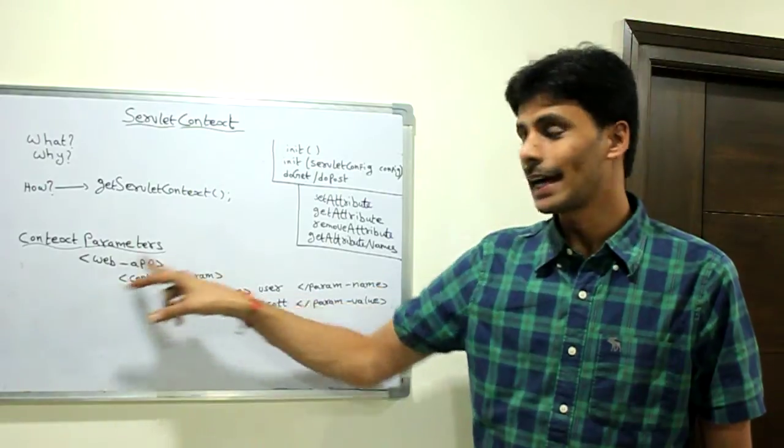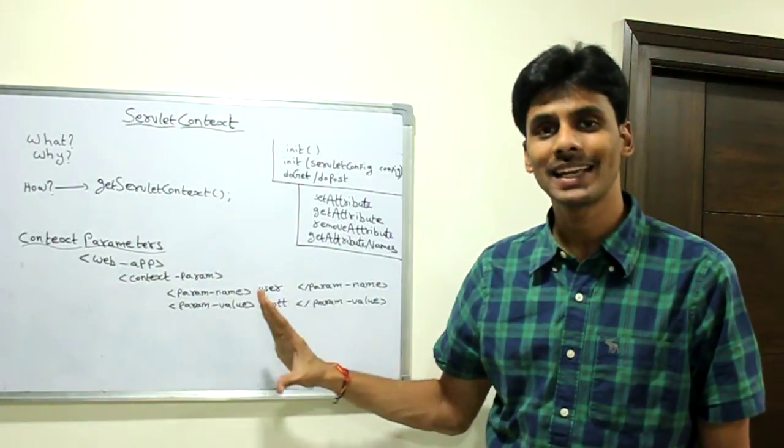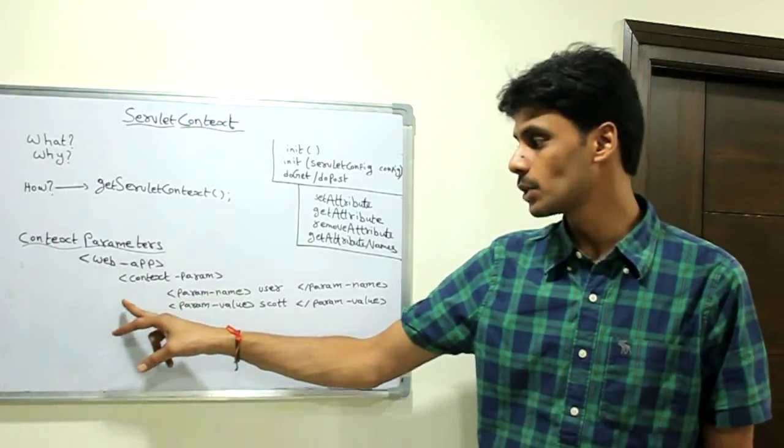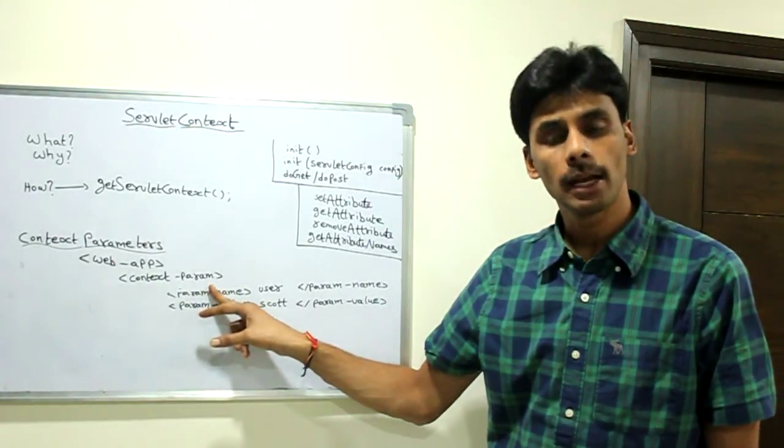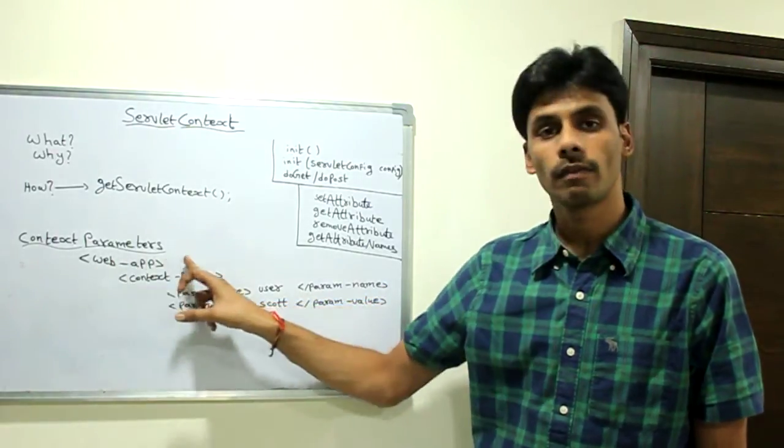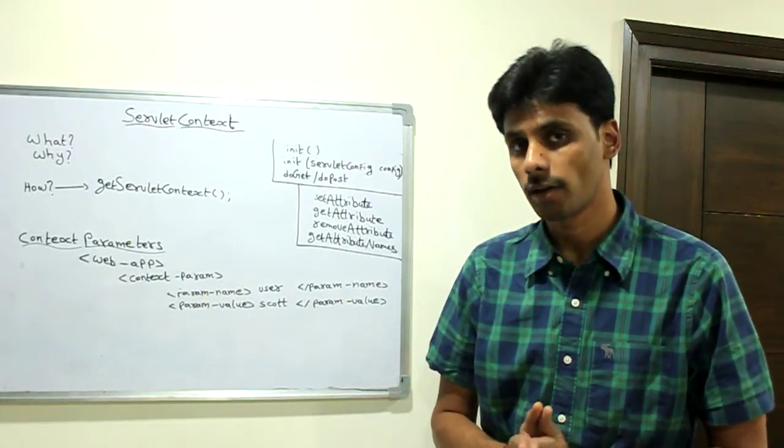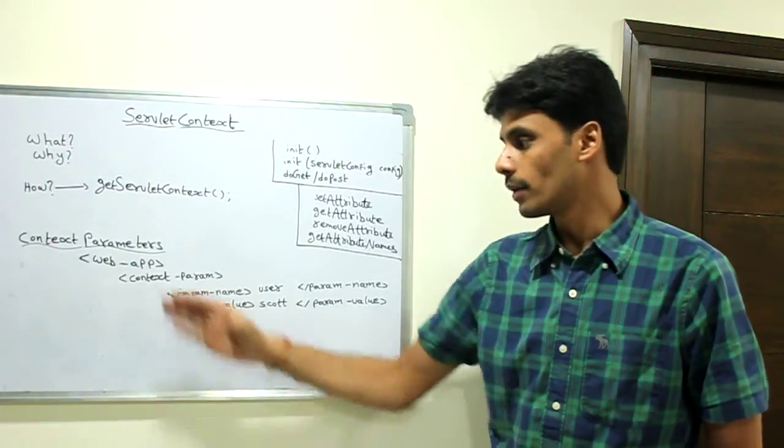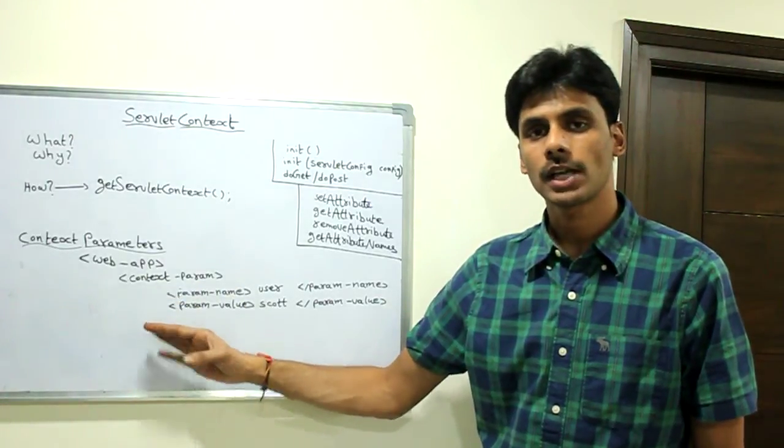Instead of doing that, we can use the context parameters, which are at an application level. How do we configure context parameters? Using the context-param element, which is the child element of the web-app, which is the root element of your web.xml file. The web-app is the root element of the web.xml. We directly declare our context parameters under it.